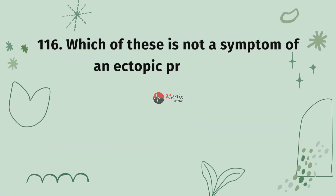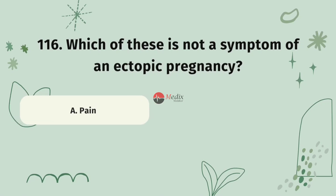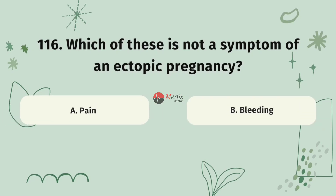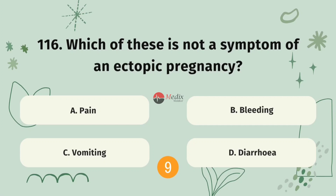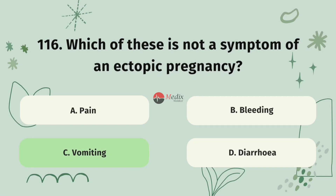Question 116. Which of these is not a symptom of an ectopic pregnancy? Option A, pain. Option B, bleeding. Option C, vomiting. Option D, diarrhea. The correct answer is C.